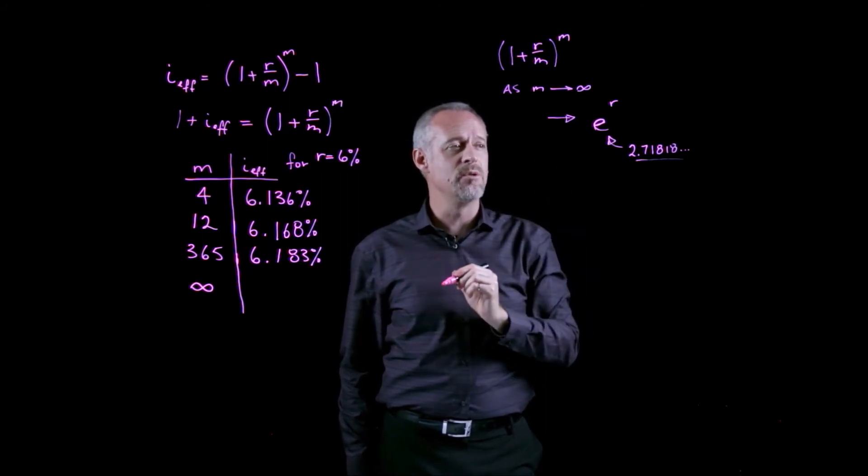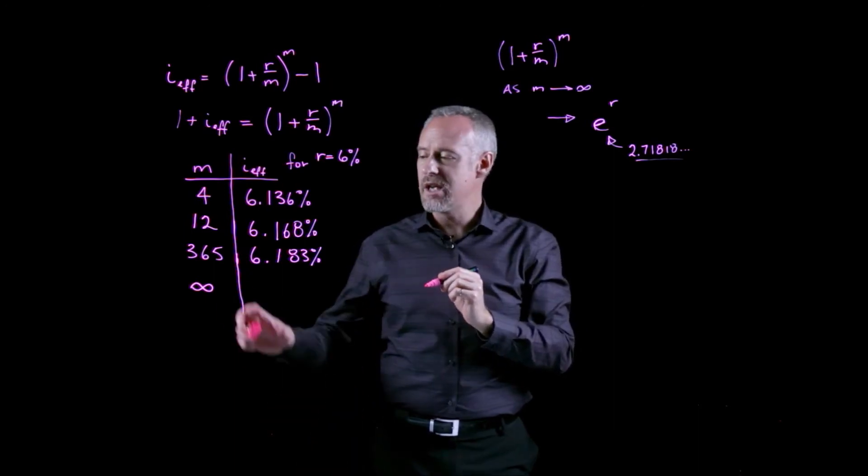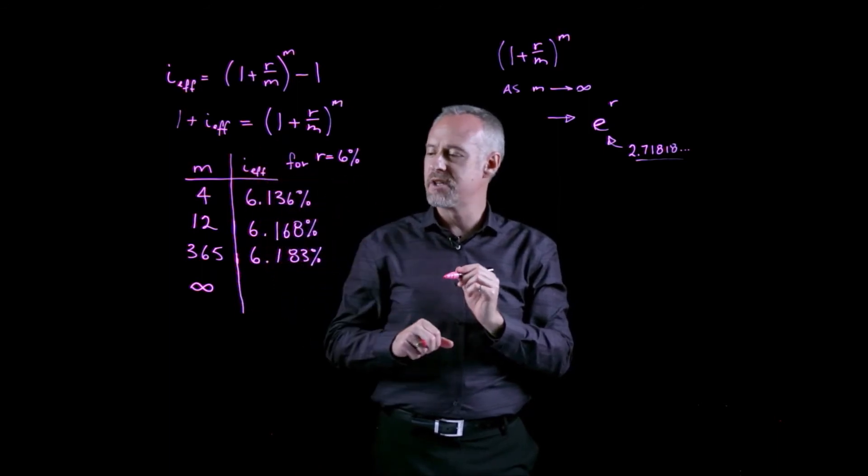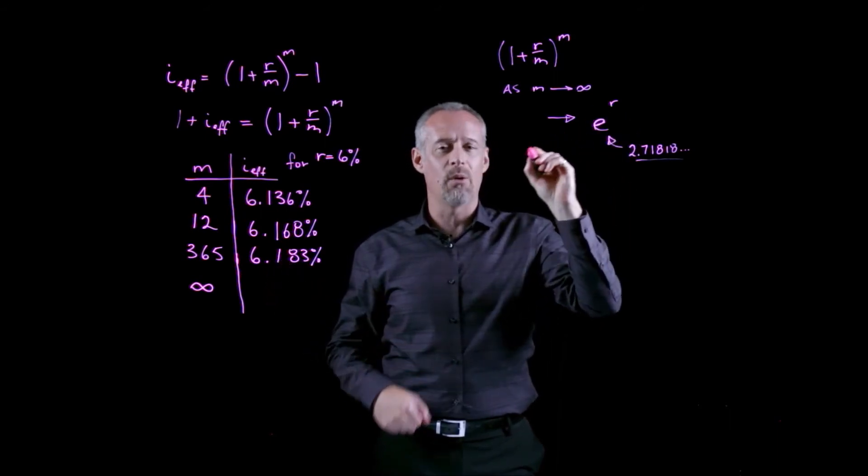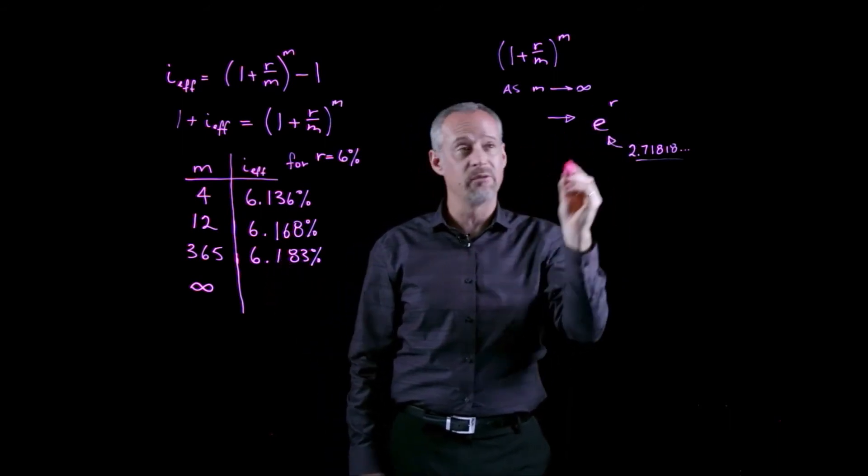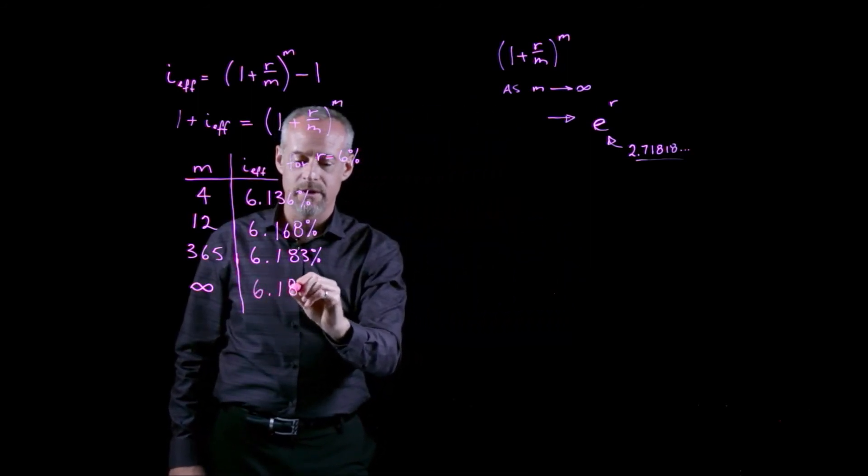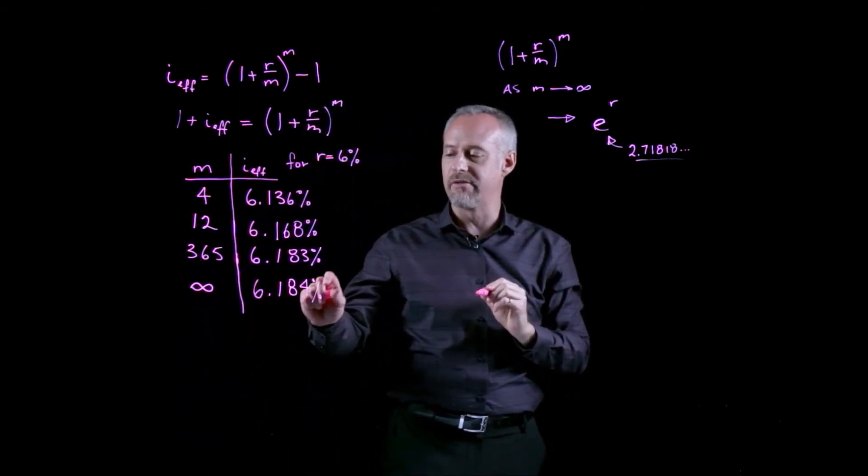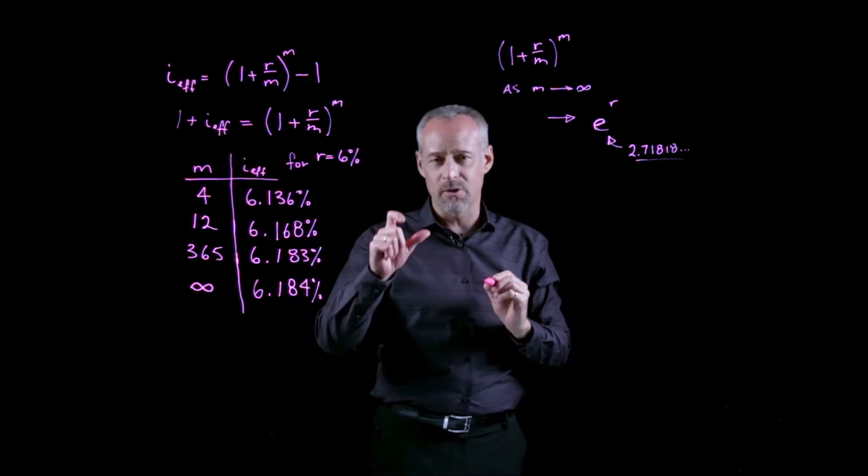This is the concept that we use when we talk about continuous compounding. So if we were to quote this same problem and say, 6% compounded continuously, we actually just take E to the power of 0.06. If we did that, you end up with 6.184 something something, actually I think it's 6.1837. It's not very much different than 365.